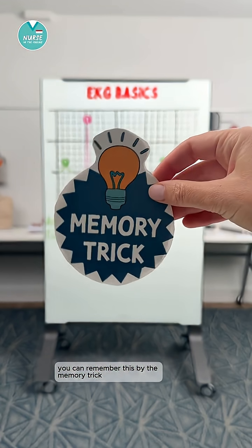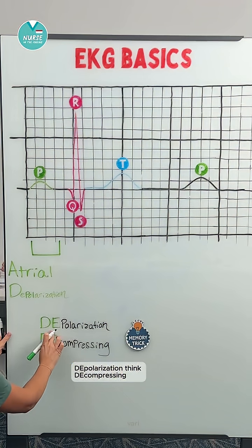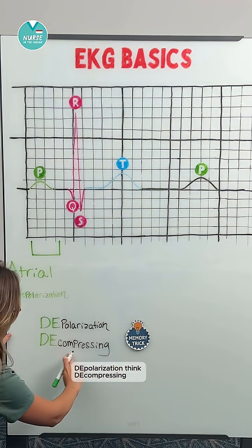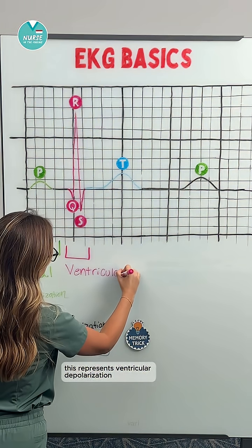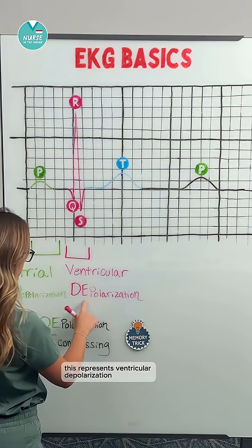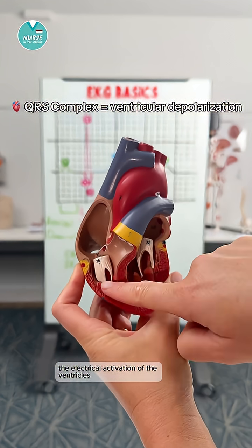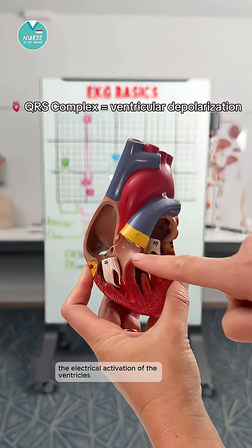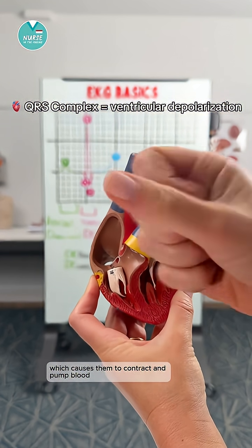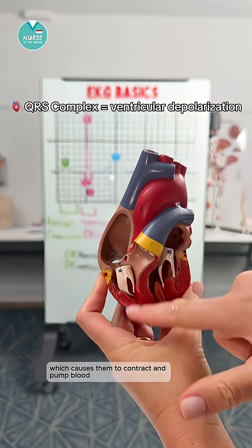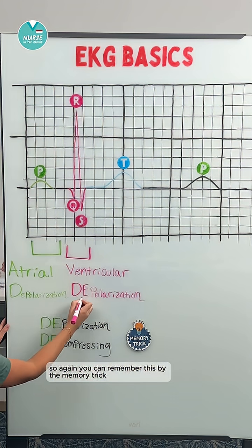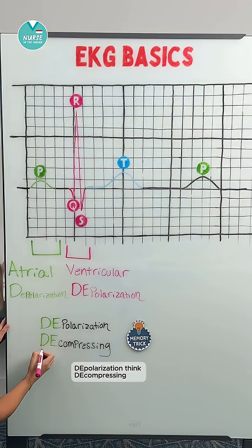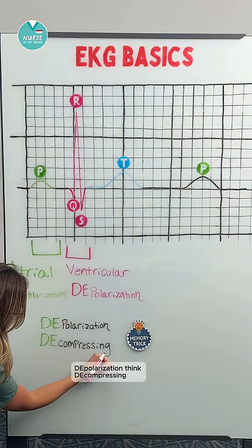You can remember this by the memory trick: depolarization, think decompressing. Next is the QRS complex. This represents ventricular depolarization, the electrical activation of the ventricles, which causes them to contract and pump blood. Again, depolarization — think decompressing.